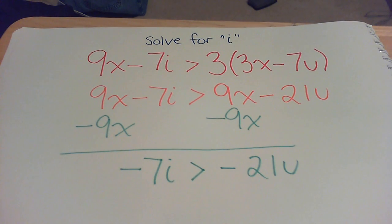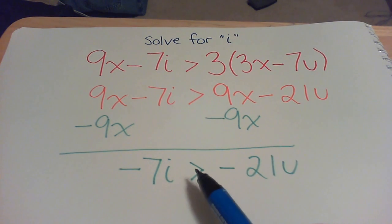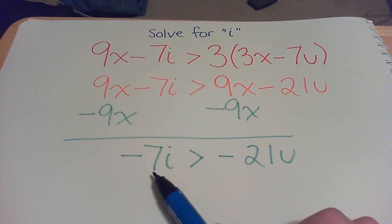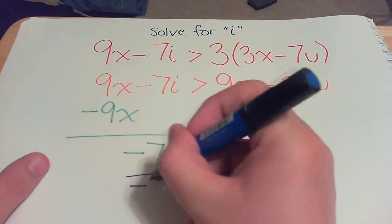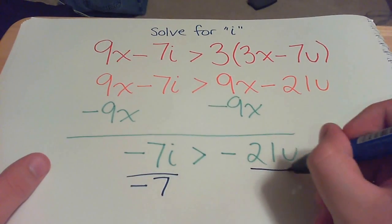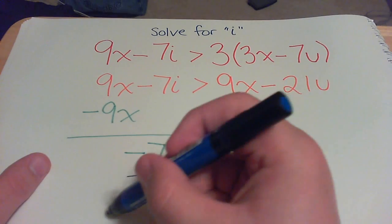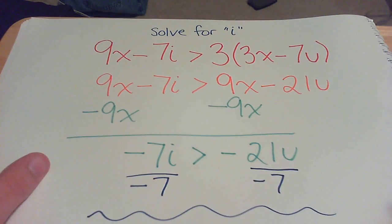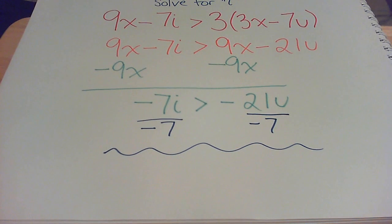And now afterwards you're going to divide by negative 7. So divide both sides by negative 7, and now here is where you would get your answer.